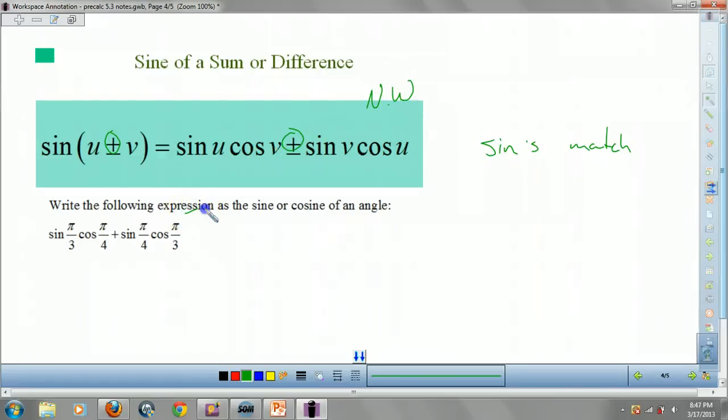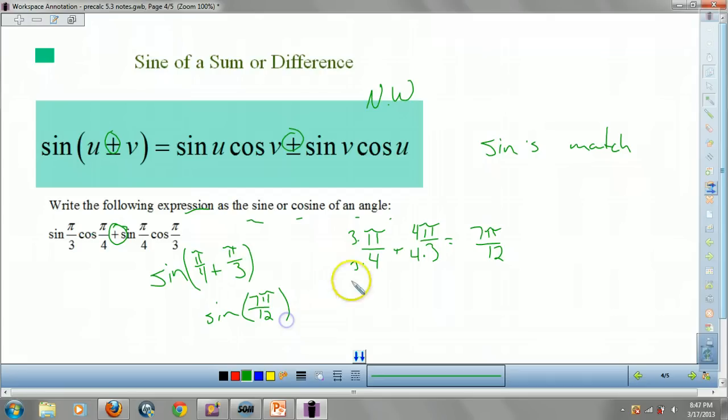So let's take a look. Write the following expression as a sine or cosine of an angle. Okay. So I know it's not cosine, because these two, they don't match up. So I'm going to be using sine. And since this is adding, I know I'm going to be adding in here. And what am I going to be adding? Well, pi over 4 and pi over 3. What is pi over 4 plus pi over 3? 7 pi over 12. And you're done.